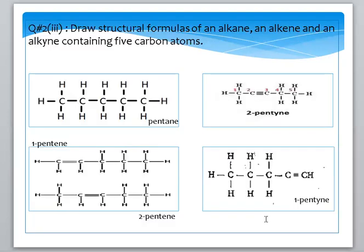The next question is: draw structural formulas of an alkane, alkene, and alkyne containing five carbon atoms. We have to draw alkane, alkene, and alkyne structures with five carbon atoms. The single bond version is pentane, and we represent it as C5H12.